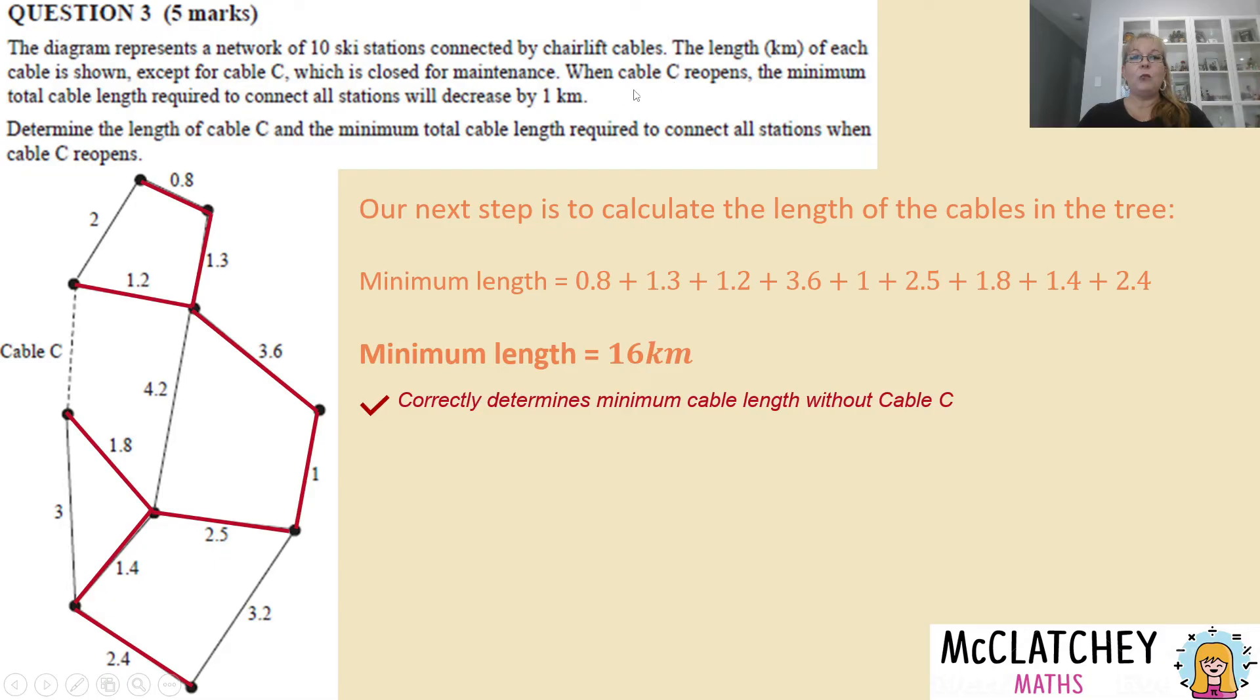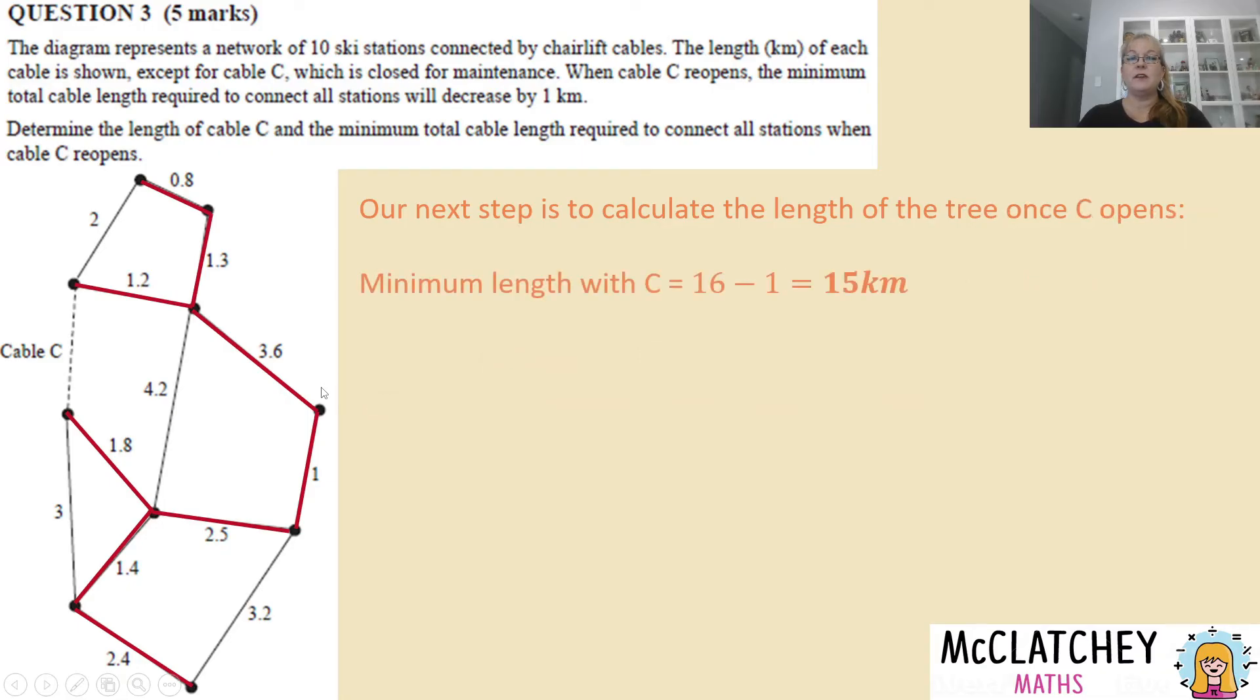Now the thing is is that when cable C reopens at the moment the minimum length is 16. When cable C reopens I'm going to be able to redraw this tree and the new length will be 15 kilometers so 16 take away one kilometer makes 15 kilometers. Actually writing that down even though it's not very hard and you probably could do that in your head actually writing that down that new length with C got you another mark. So try not to do anything in your head. Try to record everything you're doing on paper and your reasons why you're doing that.